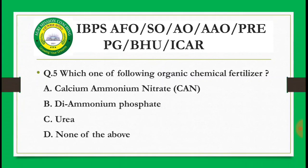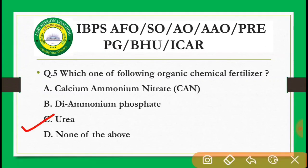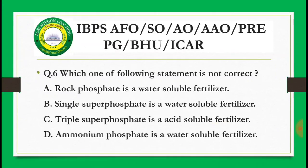Next question: Which one of the following is an organic chemical fertilizer? Options are: calcium ammonium nitrate (CAN/Kisan Khad), diammonium phosphate (DAP), urea, none of the above. The correct answer is urea, because urea contains carbon — it is a carbon-containing compound, making it an organic chemical fertilizer.